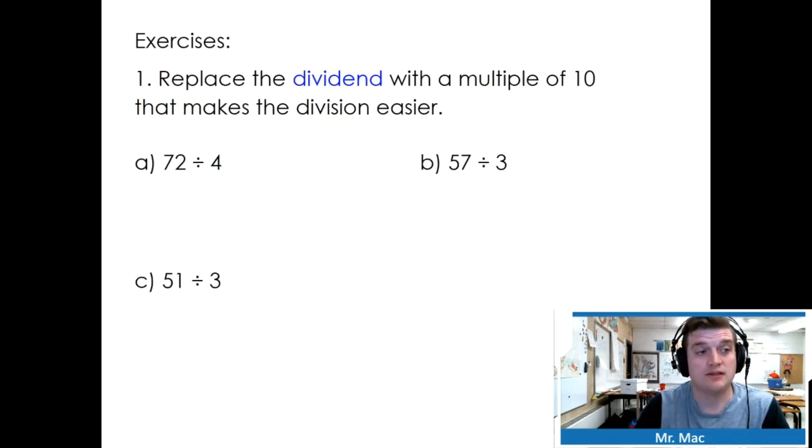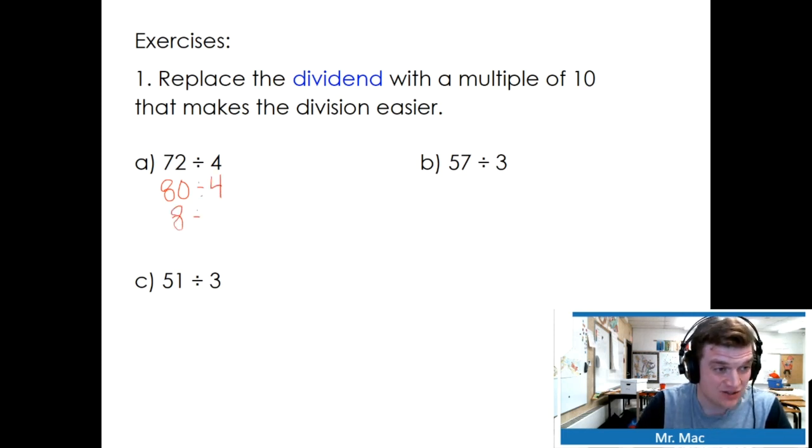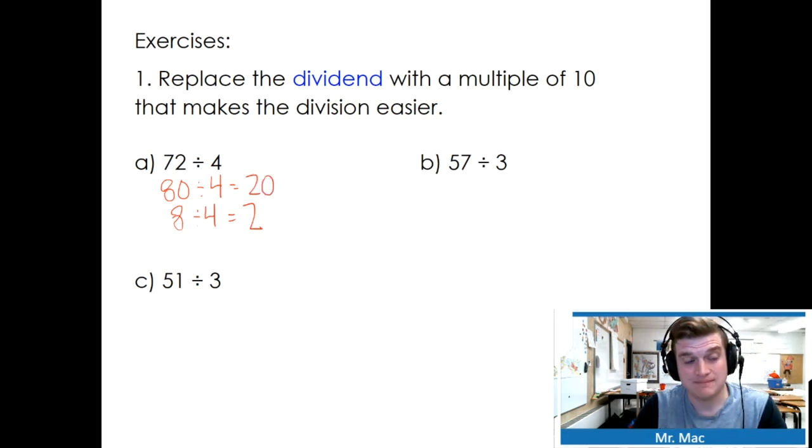Replace the dividend with a multiple of 10 that makes the division easier. 72 divided by 4. 70, I don't know if that goes evenly into 4, but 80 does go evenly into 4. Why? Because 8 goes evenly into 4. 8 can be shared with 4, 2. 80 can be shared with 4, 20. Notice how I ignored that it was in the tens place value to find my quotient.